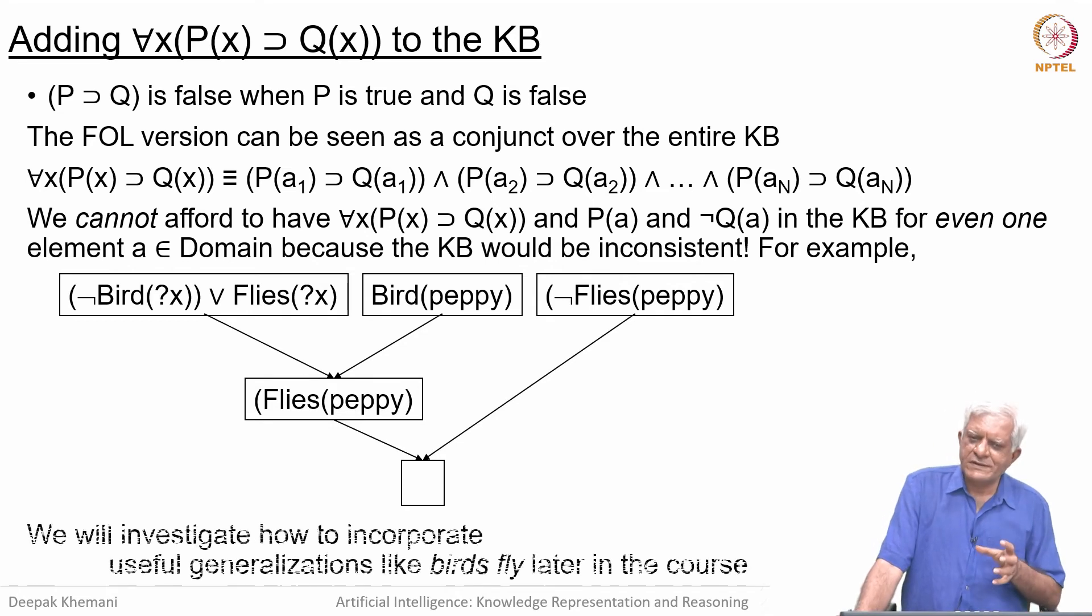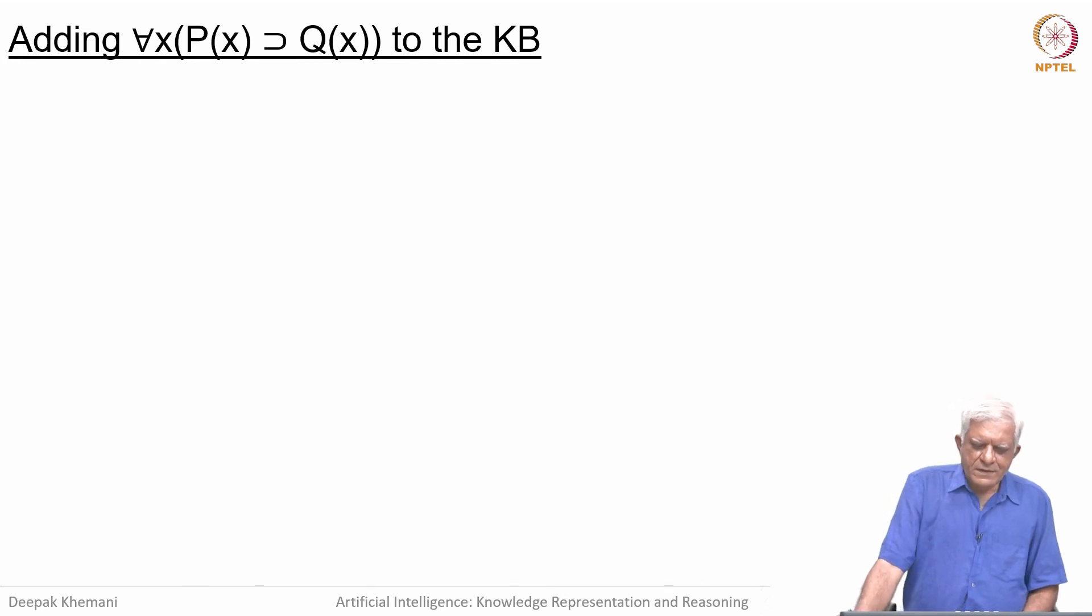But this is useful knowledge to have, to know that birds fly. We use this knowledge all the time. It is just that we cannot make it like a universal statement that for all x, Bird(x) implies Fly(x), because there may be some bird which cannot fly. We will investigate how to incorporate such useful generalizations that birds fly later in the course. Generalizations are different from universal statements. Universal statements say that for every x this must be true. Generalization says that in general it is true, so you allow for exceptions.